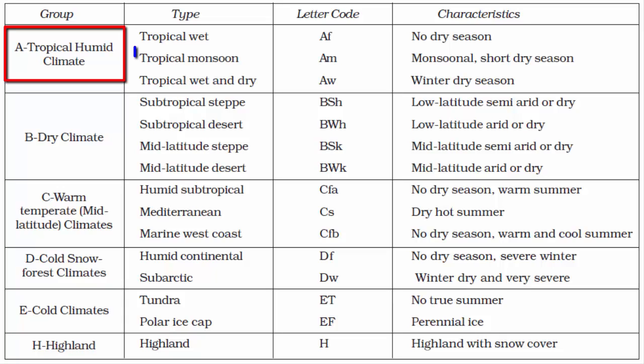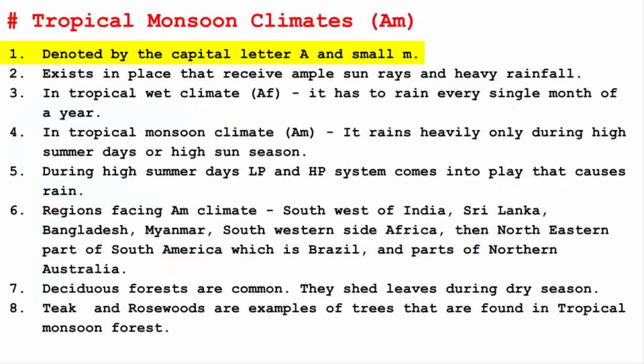In this video, we'll learn about Tropical Monsoon Climate, which is the second subdivision of Tropical Climate. It is denoted by the capital letter A and smaller letter M. The capital letter A stands for the entire group, which is the tropical climate, and the small letter M stands for monsoon.